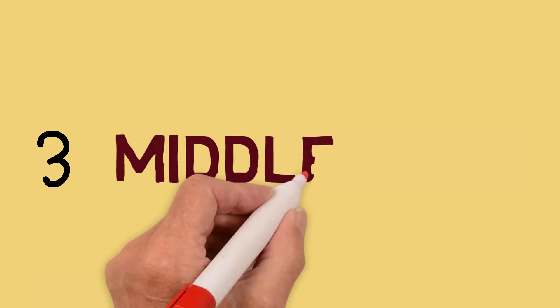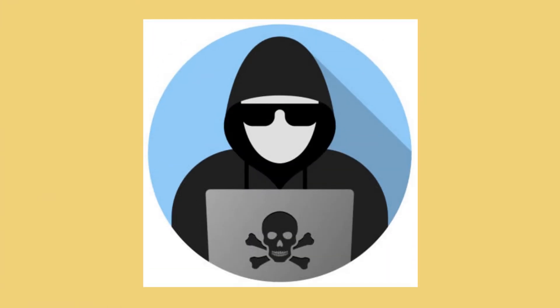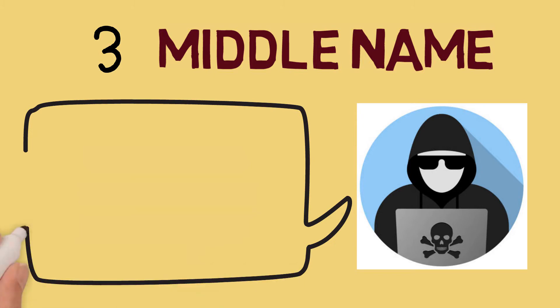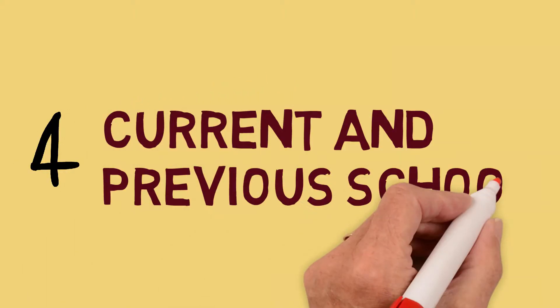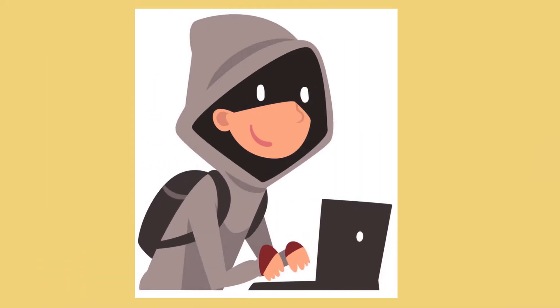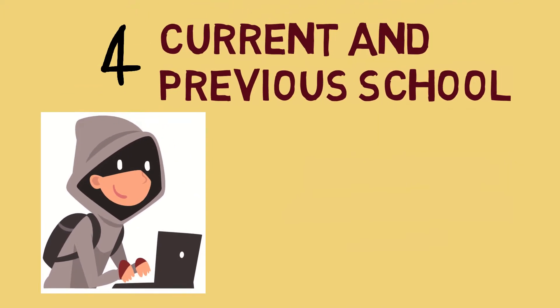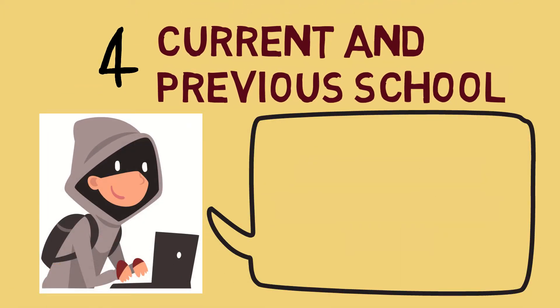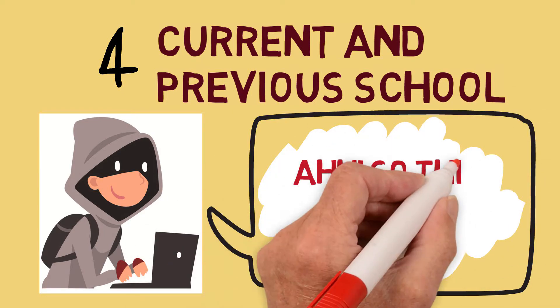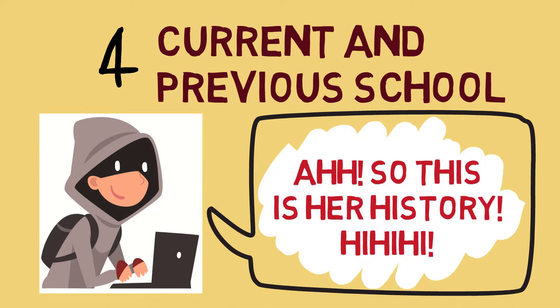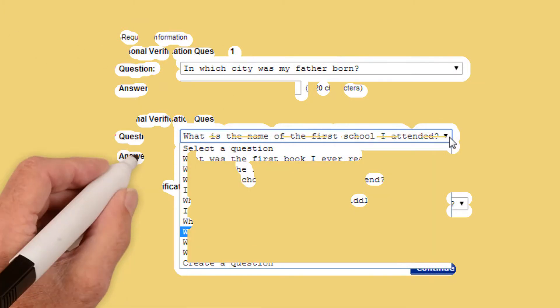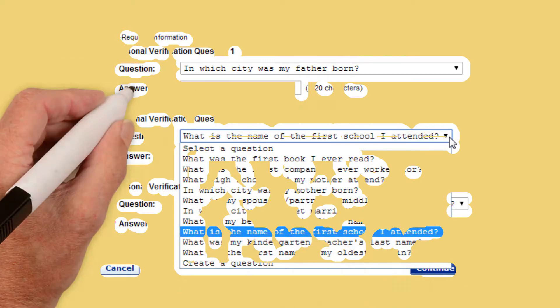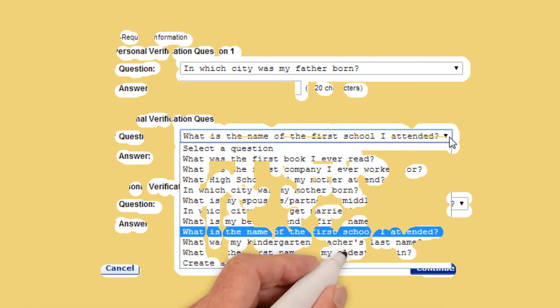Number three: sharing your middle name alone is probably not the most risky, but sharing your full name would be. Number four: current and previous school. Most people who steal identities study their subject. They can use this information for verification purposes — for example, some social networking sites request verification questions to be answered, and one of these questions is either your previous or your current school.